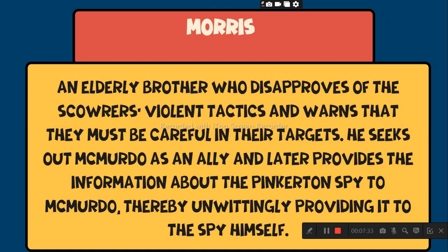Morris. An elderly brother who disapproves of the Scourers' violent tactics and warns that they must be careful in their targets. He seeks out McMurdo as an ally and later provides information about the Pinkerton spy to McMurdo, thereby unwittingly providing it to the spy himself.